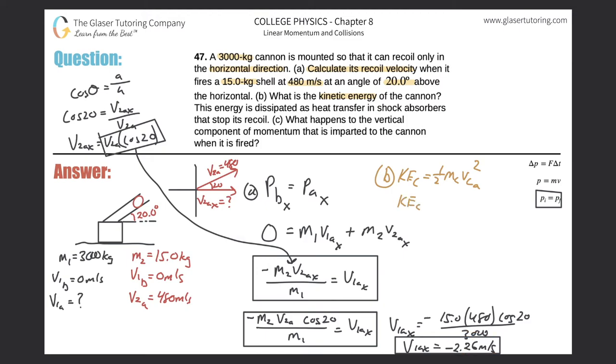So the kinetic energy of the cannon will be equal to one half. Mass of the cannon is 3000. The velocity there is negative 2.26. And that's squared. So it's going to come out to be positive. So the kinetic energy now of the cannon will simply be 0.5 times 3000 times 2.26 squared. So about, in scientific notation, 7.66 times 10 to the third. And that is in terms of joules. So that looks great.